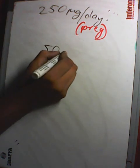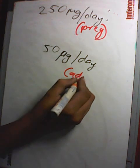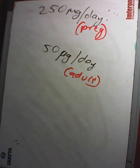The daily requirement of iodine according to WHO is 250 micrograms per day during pregnancy, and 50 micrograms per day for normal adults.